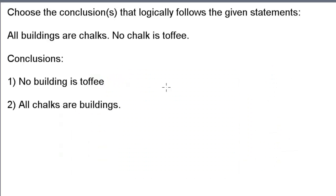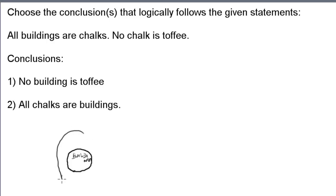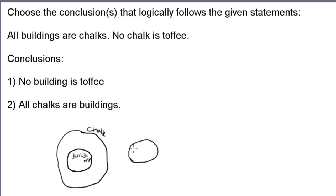Now let's look at the given statements: 'all buildings are chalks' and 'no chalk is toffee.' Let's draw the circle for buildings. Because all buildings are chalks, building should be a subset of the chalk circle, so chalk will be a superset of the building circle. The second statement — 'no chalk is toffee' — means the toffee circle and chalk circle are mutually exclusive; that is, they do not intersect and one is not a subset of the other. So we draw the toffee circle outside chalk.